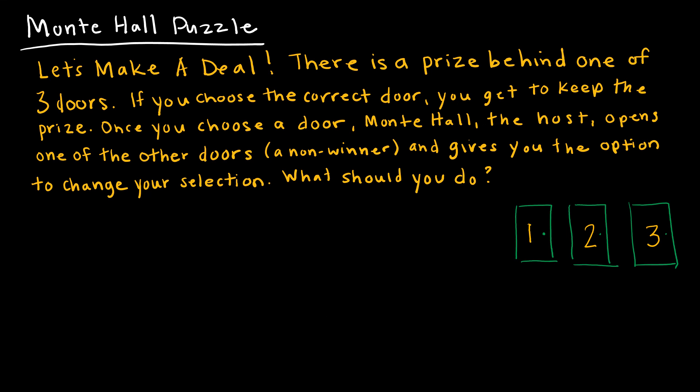Let's Make a Deal — how many of you have watched this show? I know it's Wayne Brady now, but back in the day the host was Monty Hall, which is why they call this the Monty Hall puzzle. You've got three doors, and behind one is a fabulous prize. If you choose the correct door, you keep the prize. Once you choose a door — say door number one — the host opens one of the other doors that's not a winner, say door three. The question is: should I stick with door number one, or is it better based on probability theory to switch to door number two?